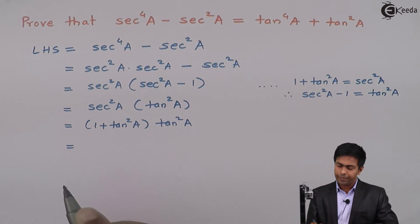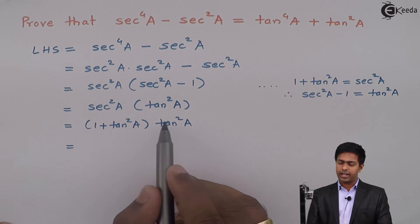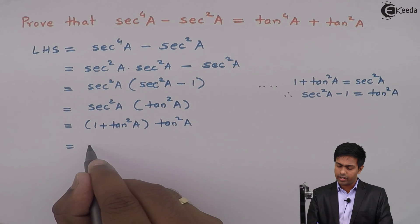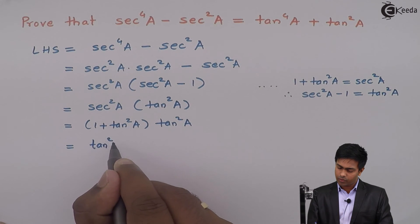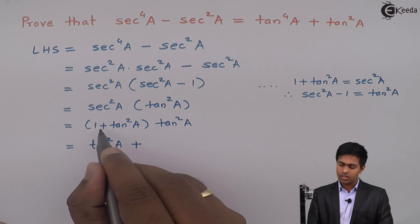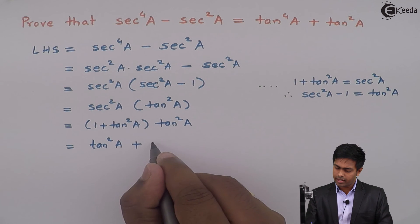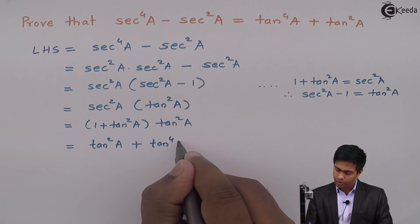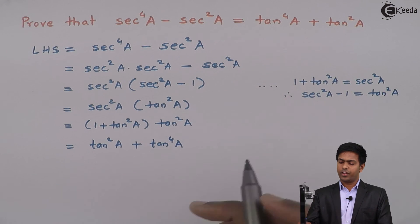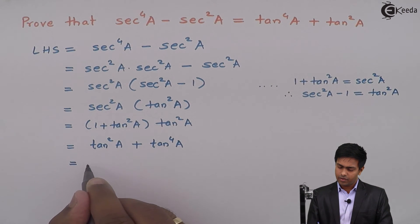And now if we will multiply the bracket with tan square A, we will get 1 into tan square A, that is tan square A, plus tan square A into tan square A is tan raised to 4A. And here we got the right hand side which is required.